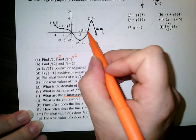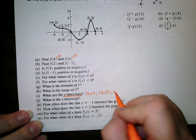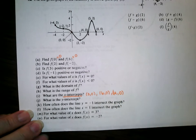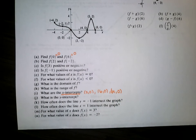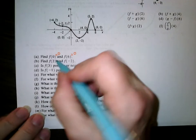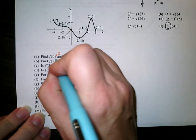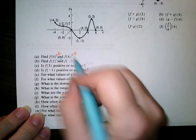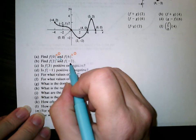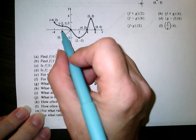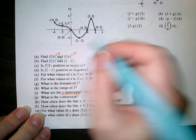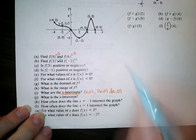f of 2 and f of negative 2. When x is 2, what is the y value? When x is 2, the y value is negative 2, so f of 2 equals negative 2. f of negative 2 — the y value is 1, so f of negative 2 equals 1.